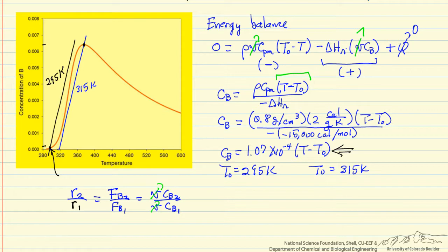and we just need to read the concentration, so approximately 0.064 for the higher feed temperature, 0.001 for the lower feed temperature. And notice these units are moles per centimeter cubed, and as we mentioned, the temperature is in Kelvin. So this ratio is 64.